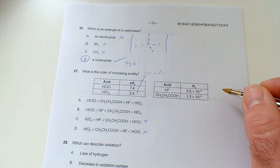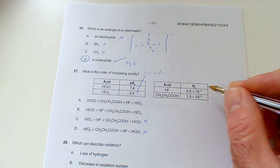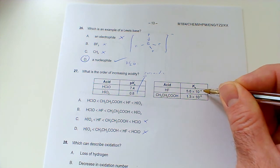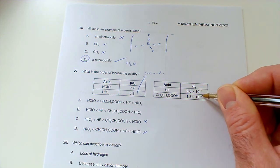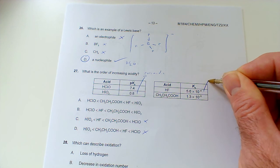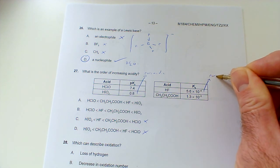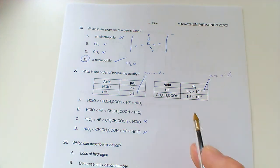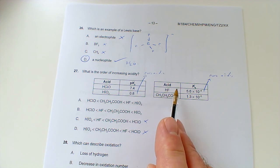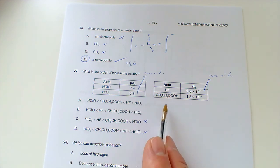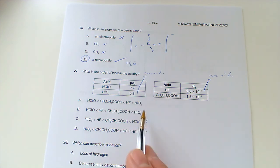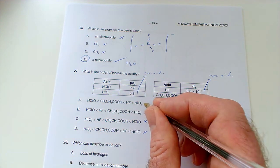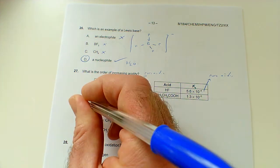For Ka, the bigger the number the more acidic. 5.6 × 10⁻⁴ is bigger than 1.3 × 10⁻⁵, so HF is more acidic than propanoic acid. We need the answer option where HF is ranked above propanoic acid. One option has HF below propanoic acid so it's eliminated, leaving the one answer that satisfies both criteria.